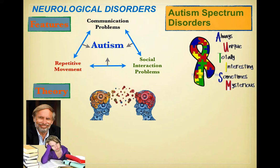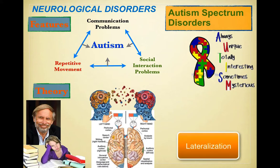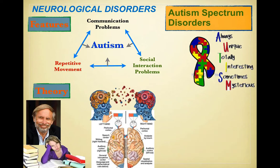MRI scans can show differences between autistic and non-autistic brains, including the connective tissue between the two halves of the brain. These lateralization differences may also suggest a causal feature. We can include neurodevelopmental deficits in this view, and there may be a genetic and therefore chromosomal cause as well.